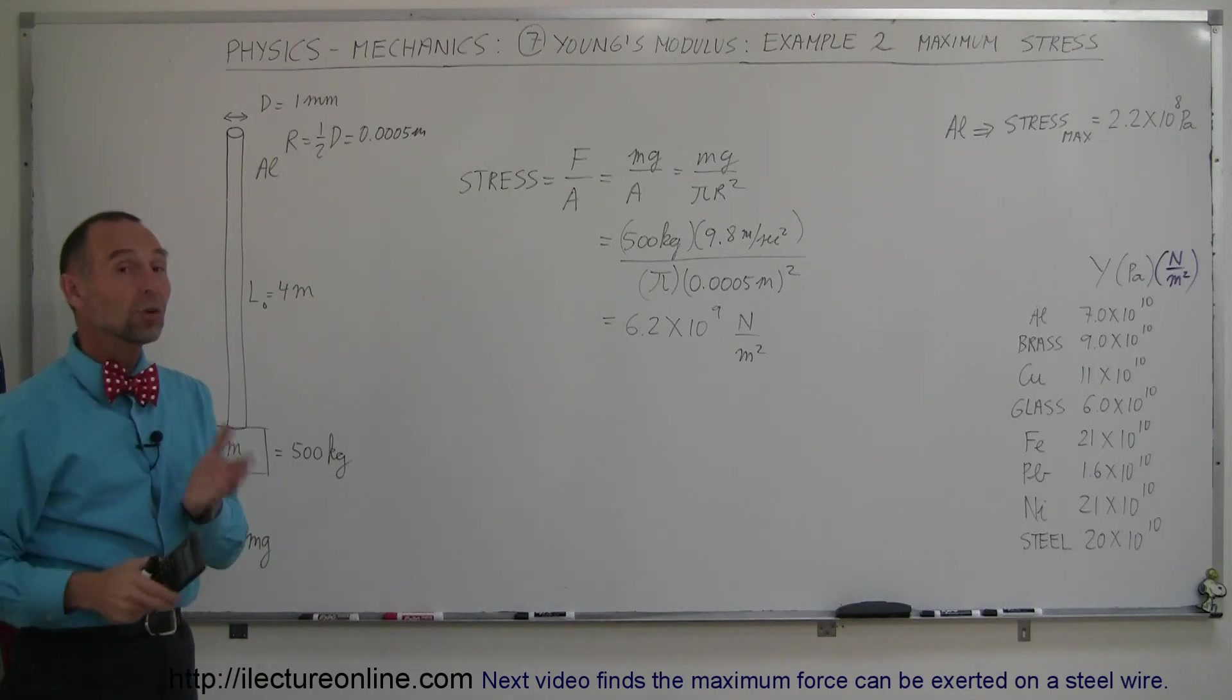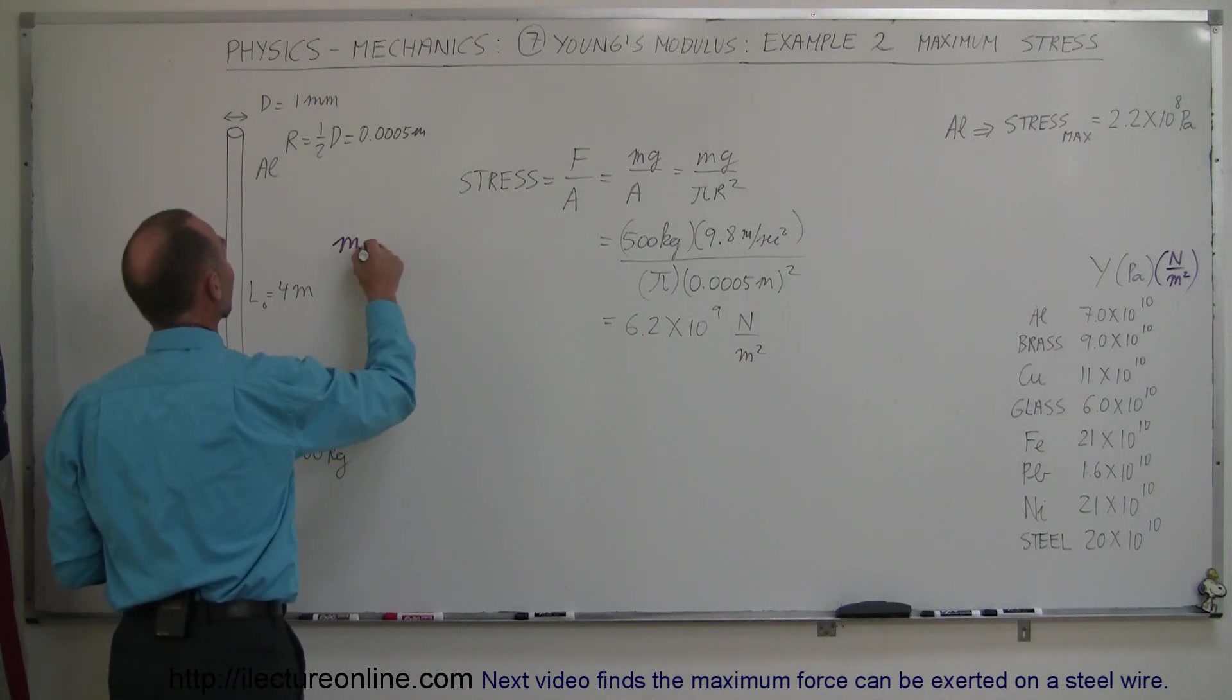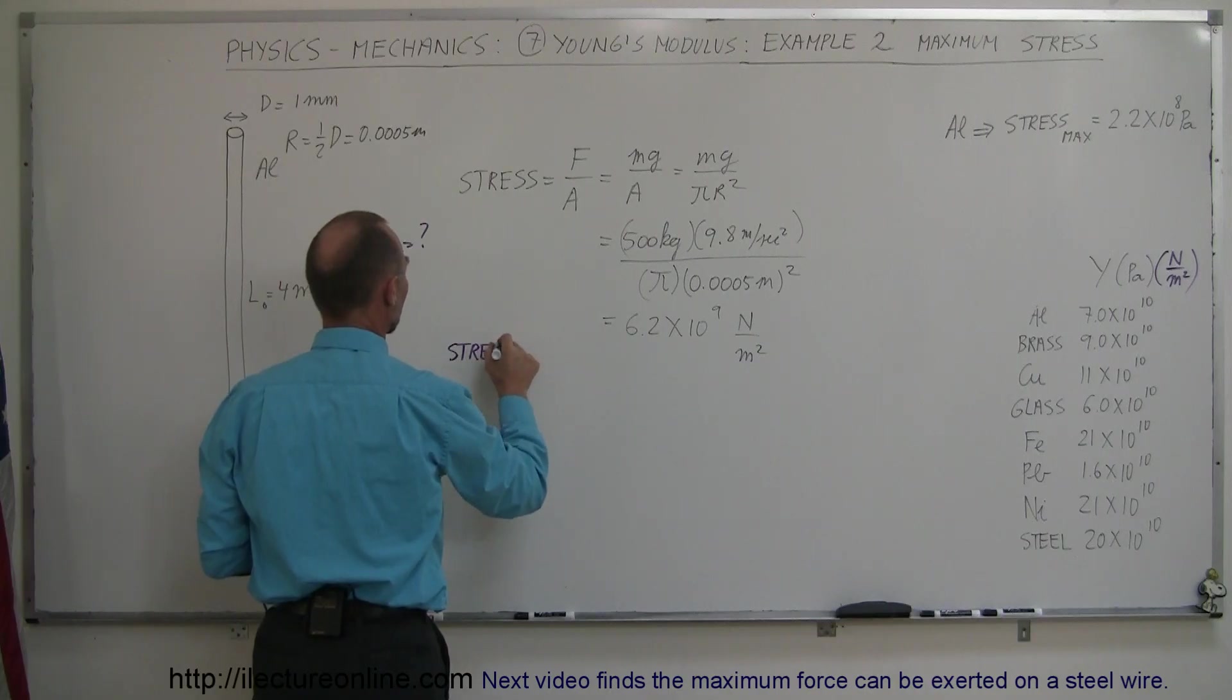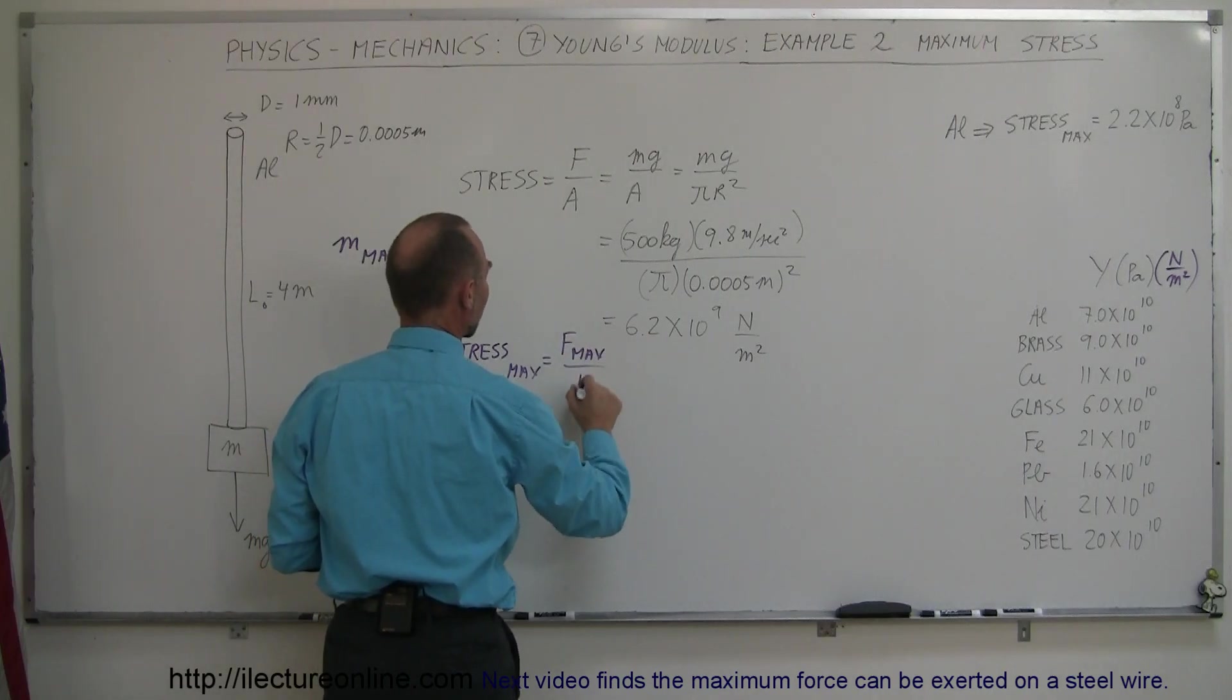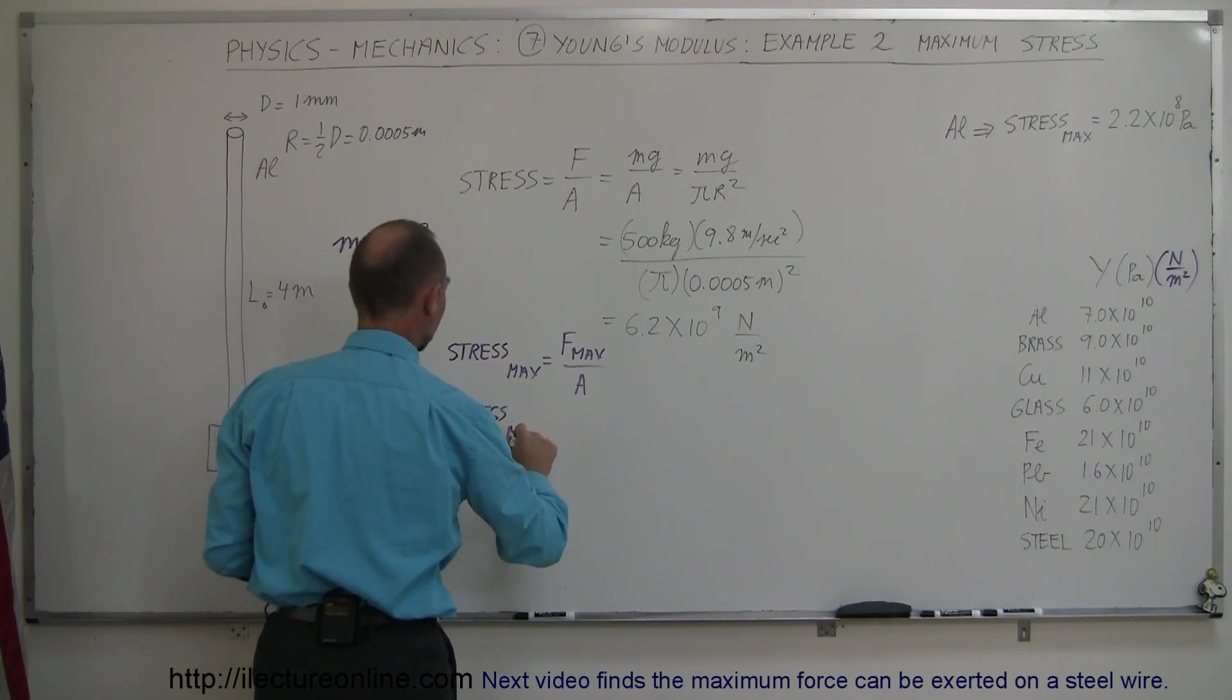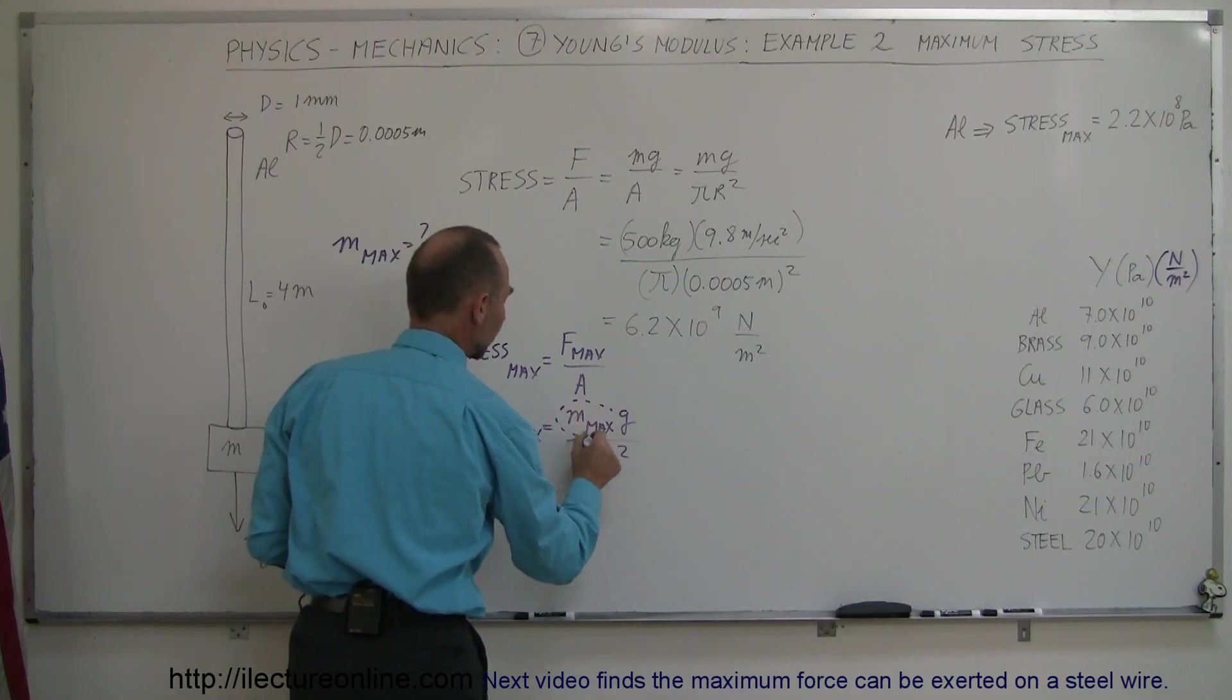The wire cannot withstand that strength. So another question may be, knowing what the maximum stress is, what is the largest mass that we can put here before it will break? So the second part of the question may be, what is the mass max we can put on this wire? Alright, so now what we're going to do is we're going to change it like this. We're going to say stress max is equal to f max divided by the cross-sectional area. And f max, of course, will be m times g, which means that the mass will be limited. So we can say that stress max is equal to m max times g divided by the cross-sectional area, which is pi r squared. And so what we're looking for here is we're looking for the maximum mass.